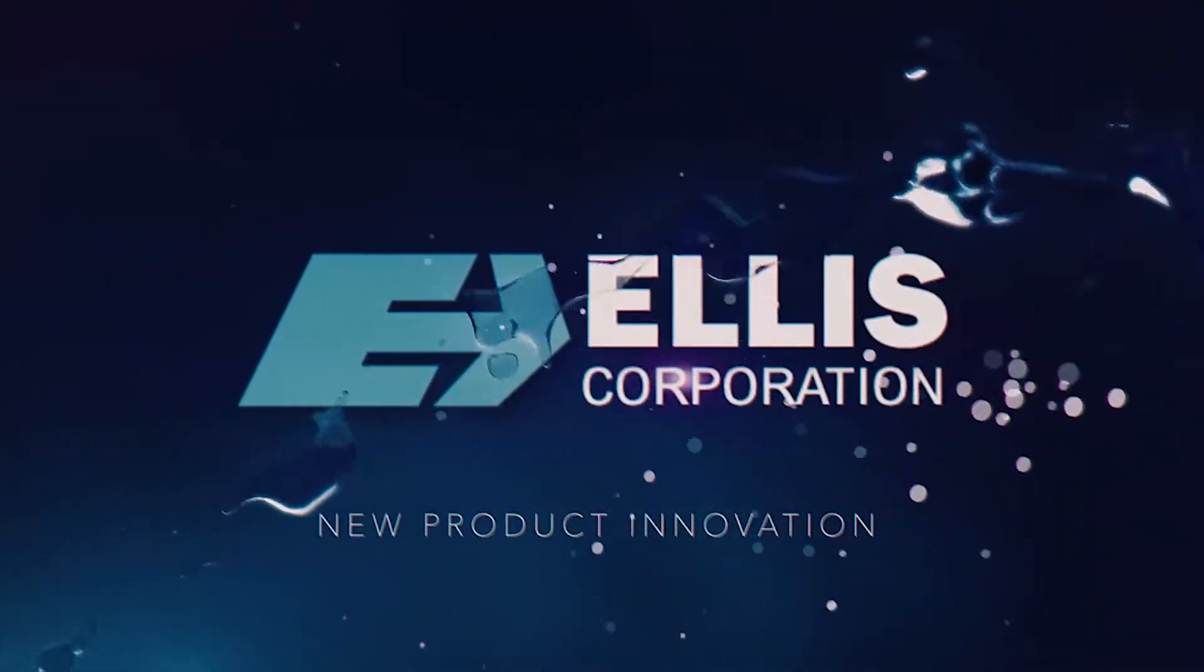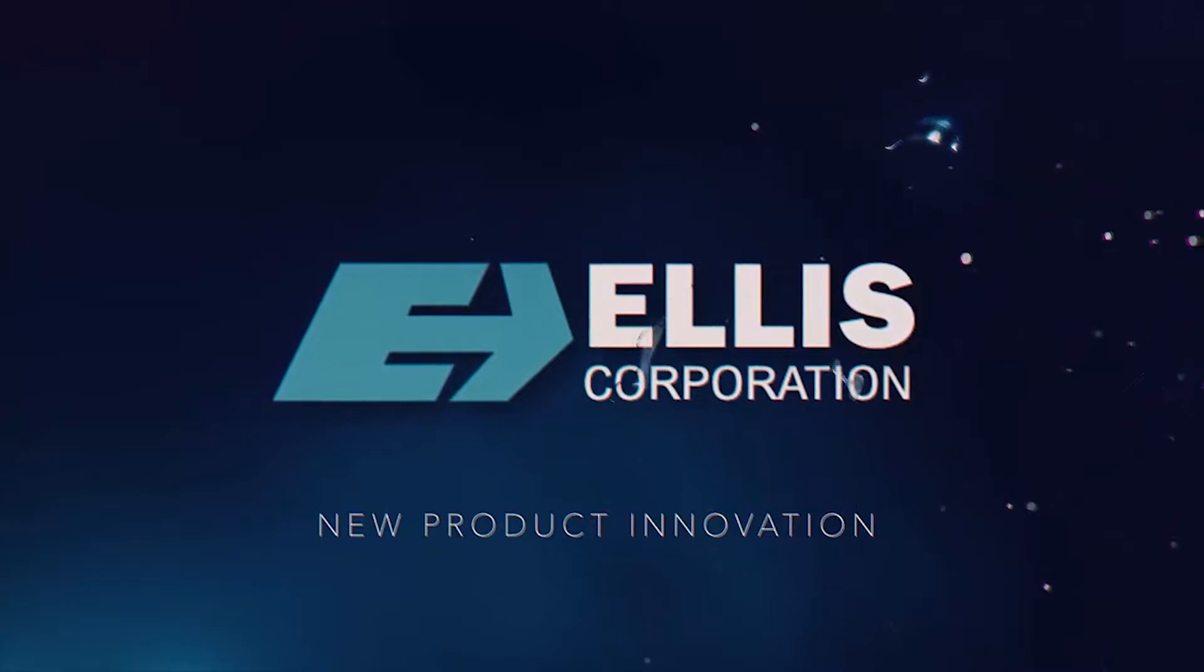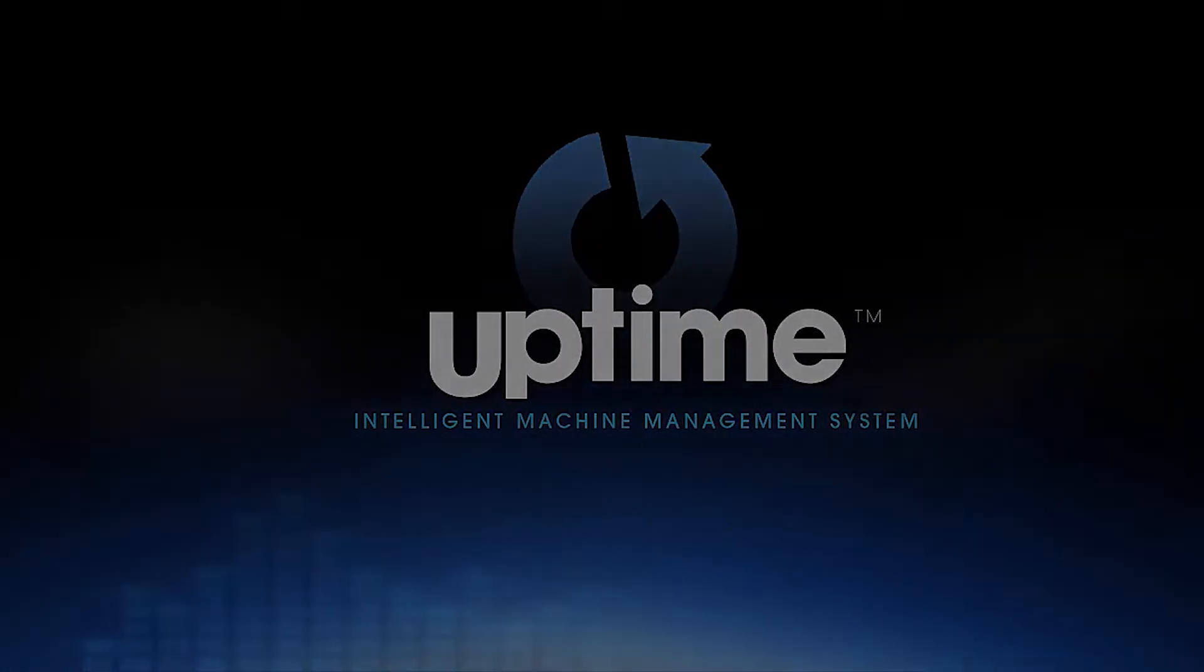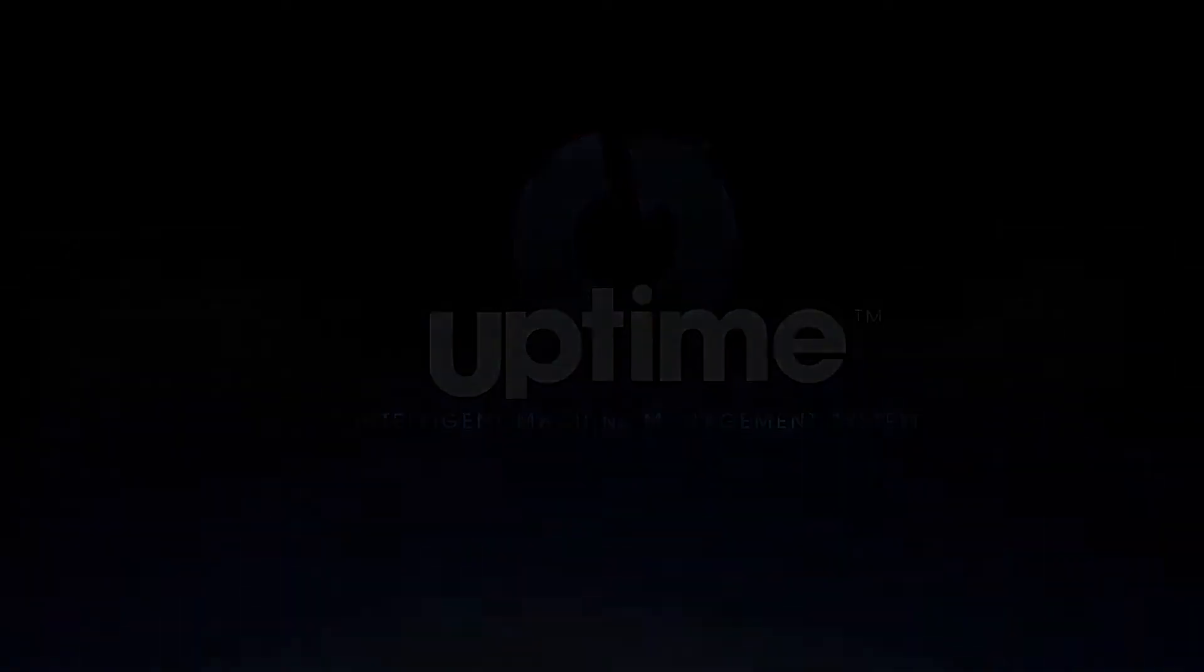That's why Ellis Corporation developed the Uptime Intelligent Machine Management System. This breakthrough system shrinks downtime and makes your washer and dryer production line easier to operate.